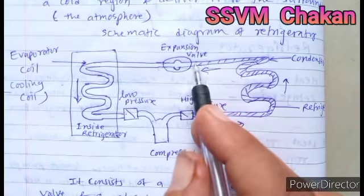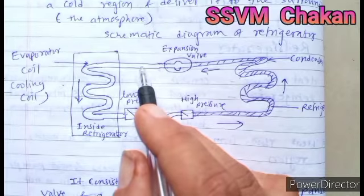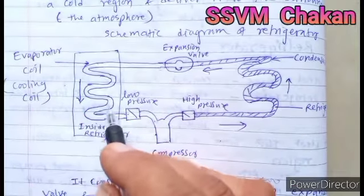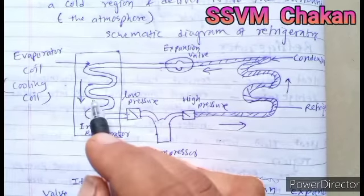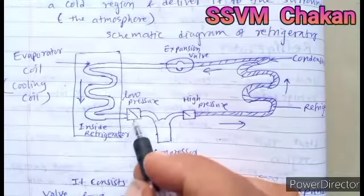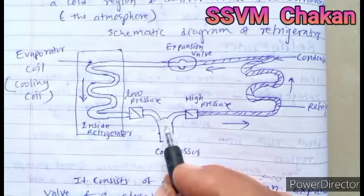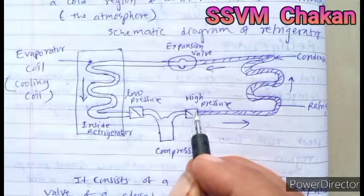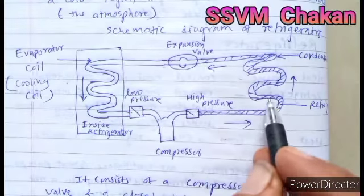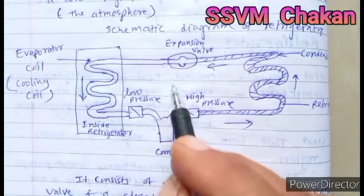At slightly lower temperature, the refrigerant reaches the expansion valve again and enters the evaporator coil. It converts into gaseous state as temperature decreases. As it passes through the evaporator coil inside the refrigerator, it absorbs heat from the inside portion. This gaseous-state refrigerant at low pressure and slightly higher temperature reaches the compressor again. The compressor compresses the gas, pressure increases, and it converts into liquid state at higher temperature. It passes through the condenser coil, releases heat into the atmosphere, and this cycle repeats continuously.